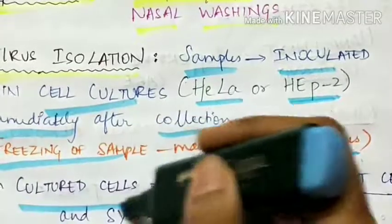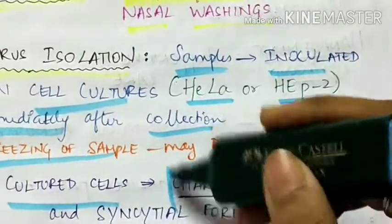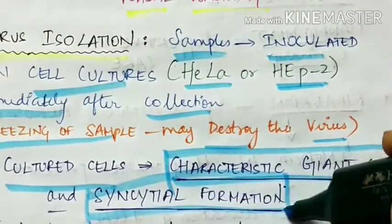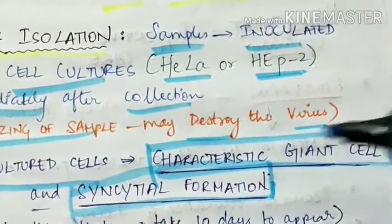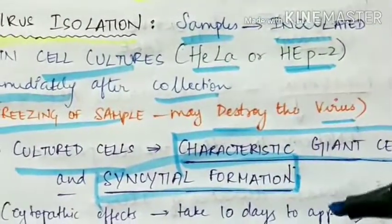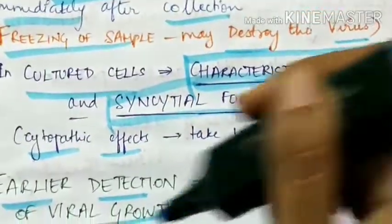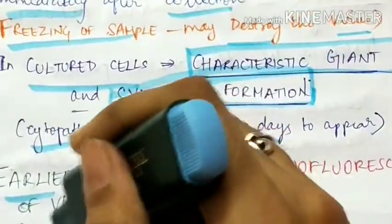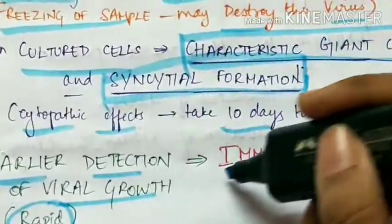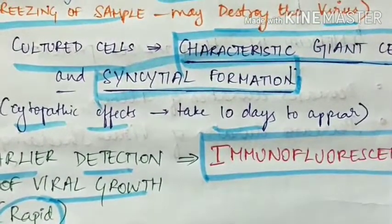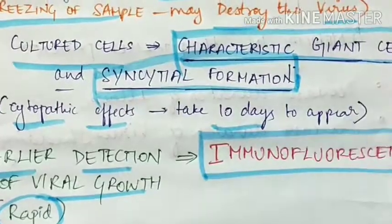In cultured cells there is characteristic giant cell and syncytial formation, which is characteristic of respiratory syncytial virus. The cytopathic effects take about 10 days to appear. For early and rapid detection of viral growth, immunofluorescence is used.